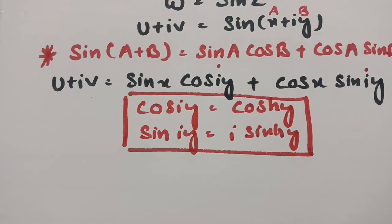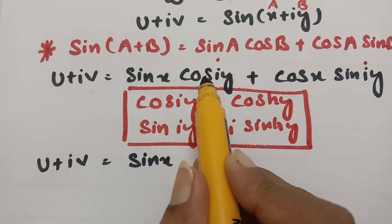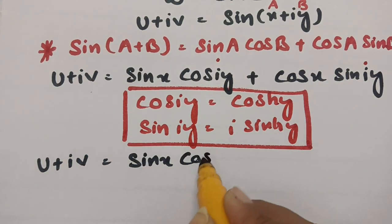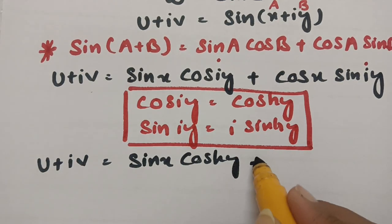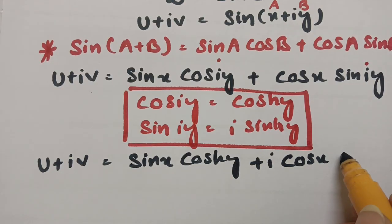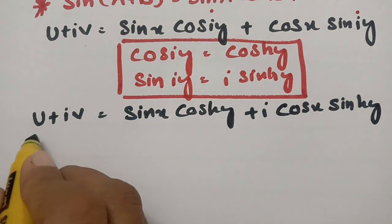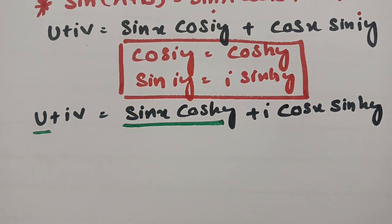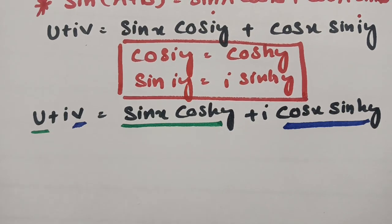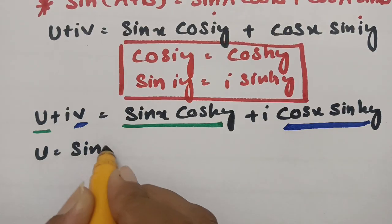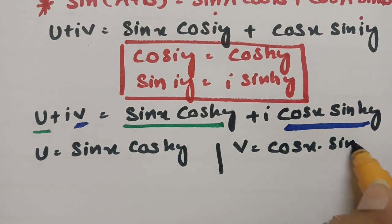Substituting, u + iv = sin(x)·cosh(y) + i·cos(x)·sinh(y). Comparing real and imaginary parts: u = sin(x)·cosh(y) and v = cos(x)·sinh(y).